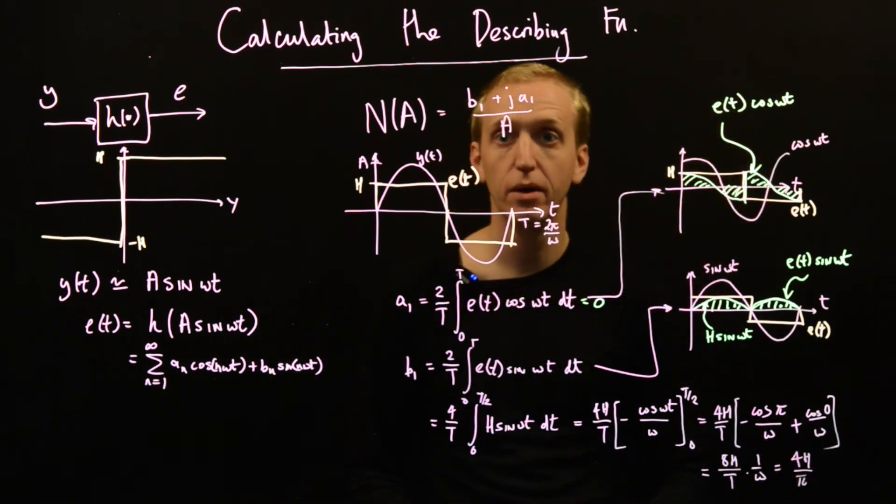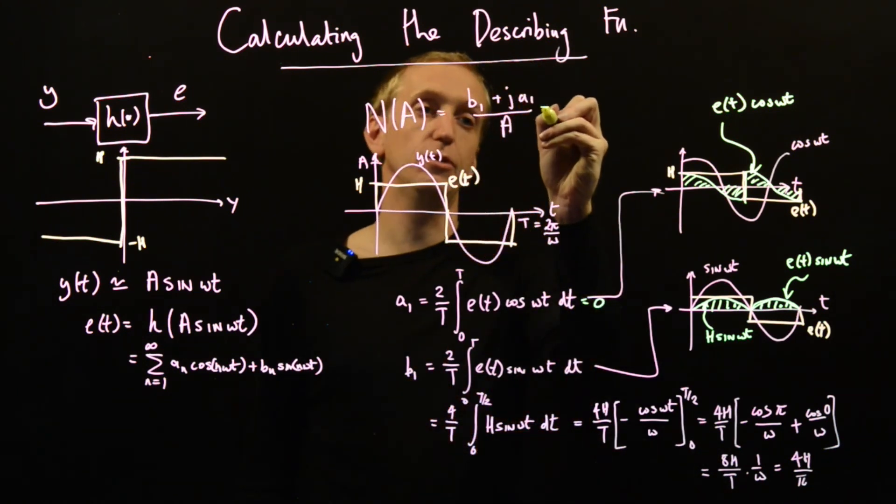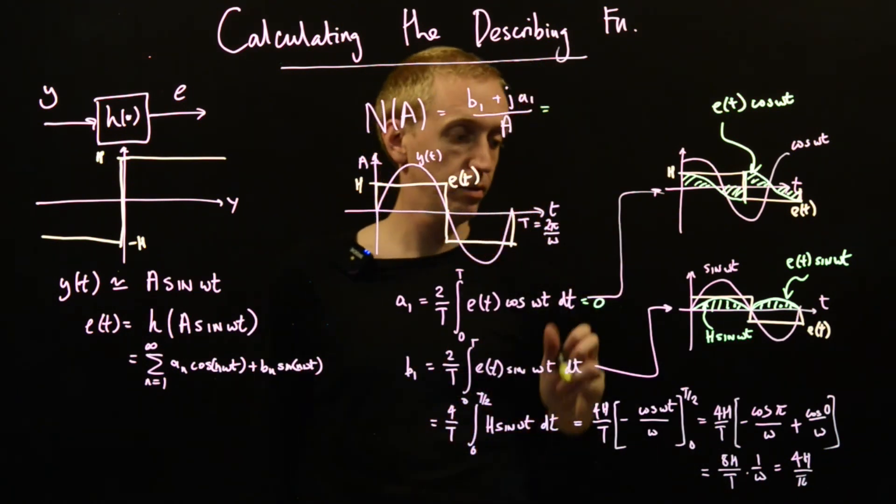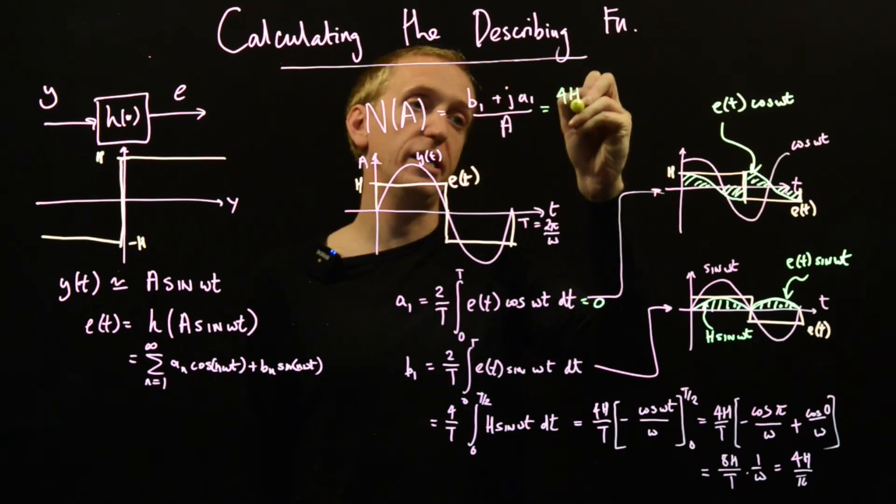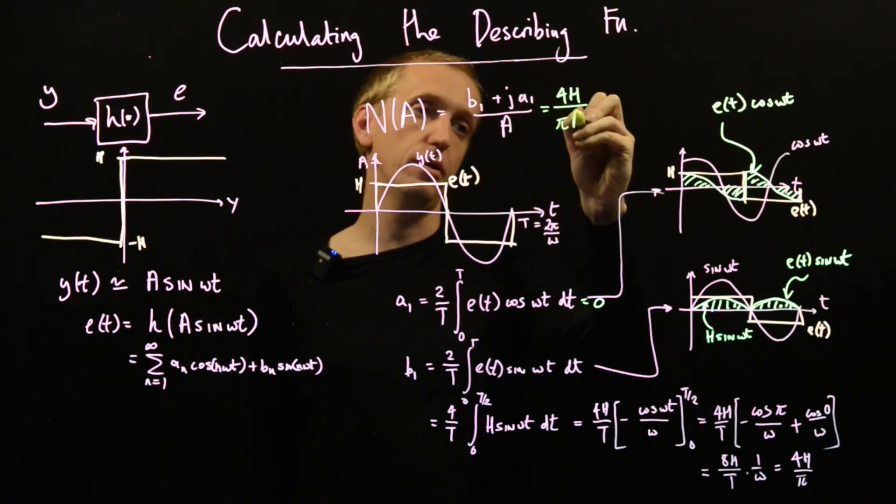So what is our describing function equal to? Well, this is then just equal to, well, b₁, which is 4h over π, a₁ is 0, and a.